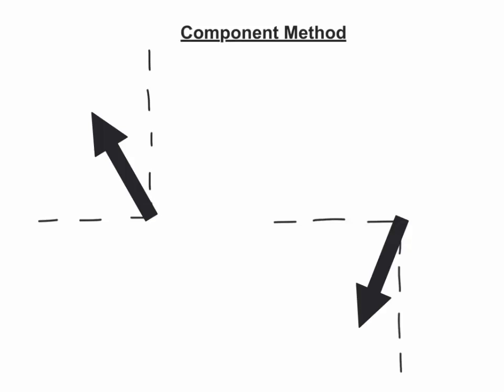Lastly, the component method. So when we break down vectors into components, what we're trying to do is figure out how much of the vector goes horizontal and how much of the vector goes vertical. When we figure out how much of each vector goes in those directions, then we can add up just the horizontal and vertical components to figure out what the resultant would be.